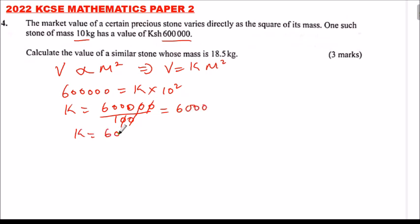Now we are required to find the value of a similar stone whose mass was 18.5. So we use this formula here. The value of that stone is equal to K which is 6,000 multiplied by the mass 18.5 squared. You use your calculator.